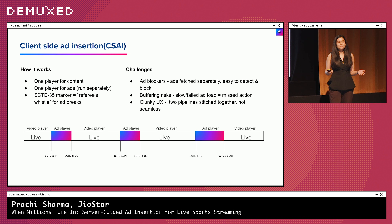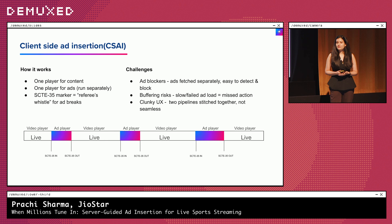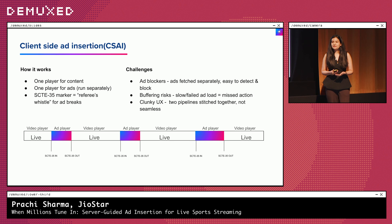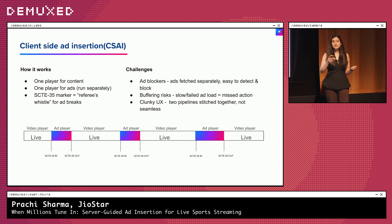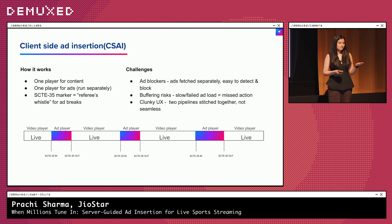Now let's talk about various methods of ad insertion, starting with the first one: CSAI, or client-side ad insertion. In this model, the client app essentially runs a two-player strategy — one player for the content stream and another separate player for playing the ad creative, hoping that they stay in sync. The trigger for indicating an ad break is usually a SCTE-35 marker, which is embedded in the live feed. When an ad break occurs, the content player pauses and the ad player spins up. The client makes a call to the ad server, it fetches the relevant ad creative, and then that creative plays in the ad player. Once that's done, control is handed back to the content player.